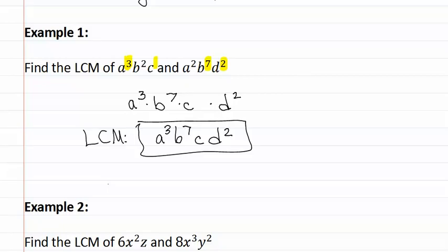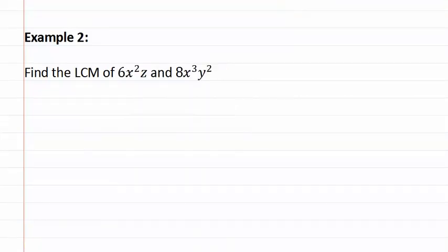Let's look at example two. Example two asks us to find the least common multiple of 6x²z and 8x³y².